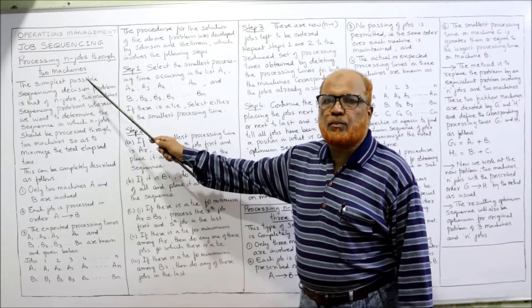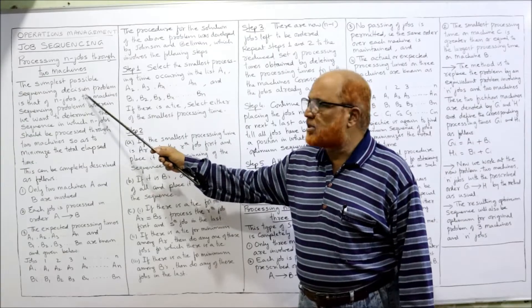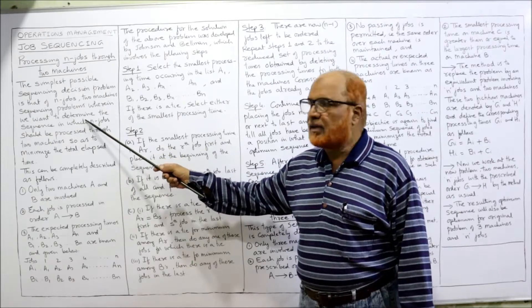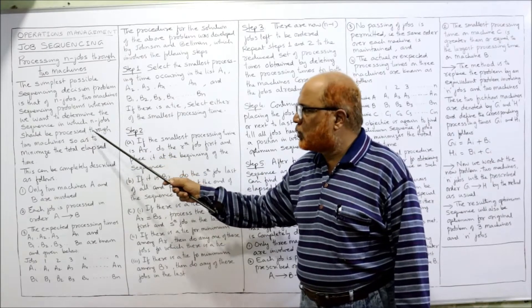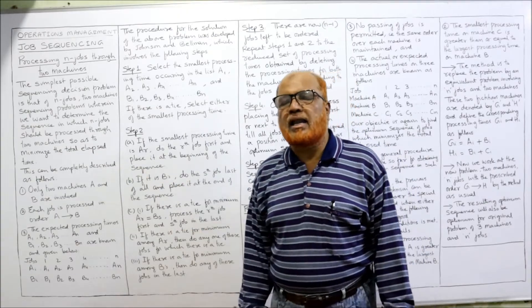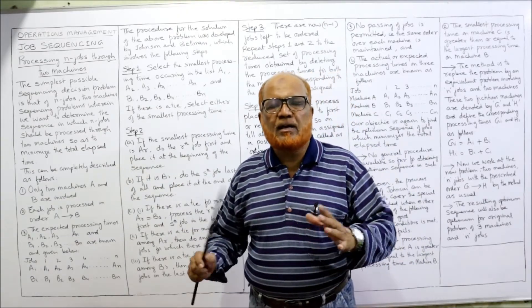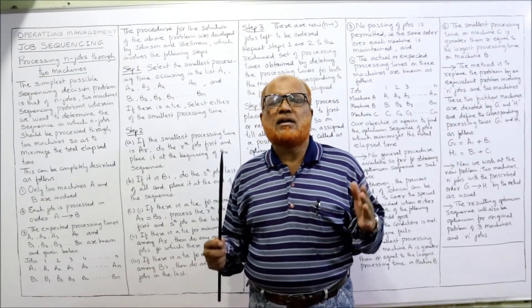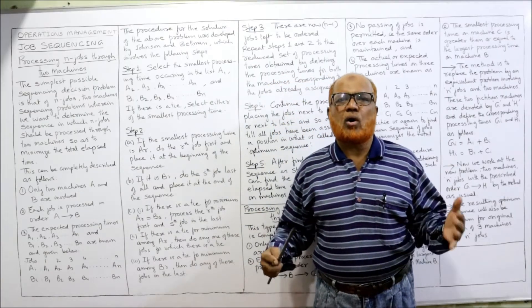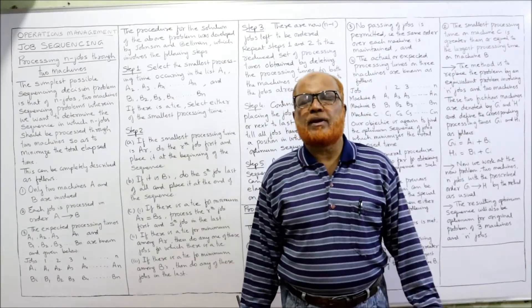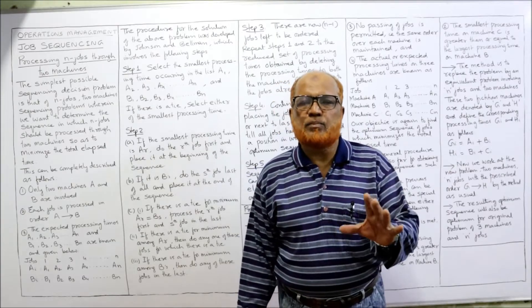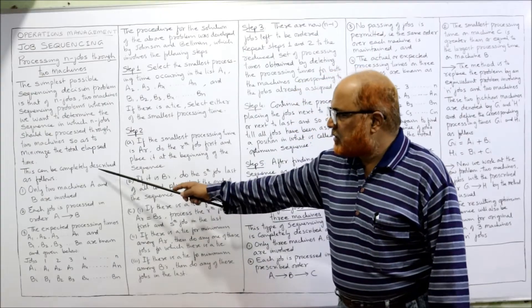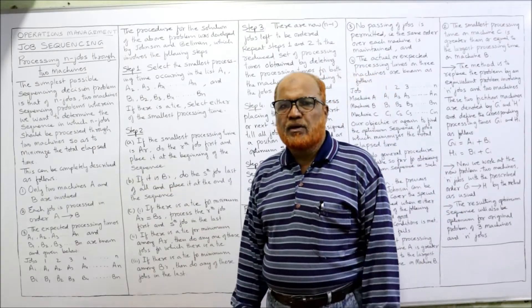The simplest possible sequencing decision problem is n jobs and two machines, where we want to determine the sequence in which the n jobs should be processed through two machines so as to minimize the total elapsed time. We are concerned with finding the order or sequence of completing all n jobs with the ultimate objective of completing all jobs in the minimum possible time.